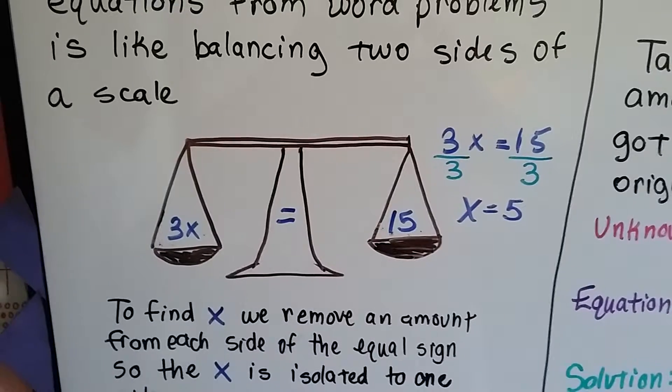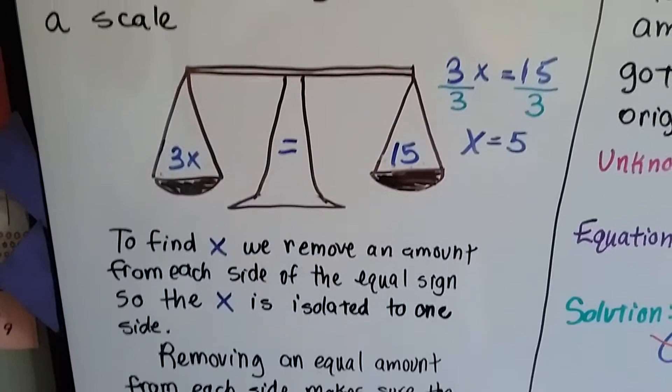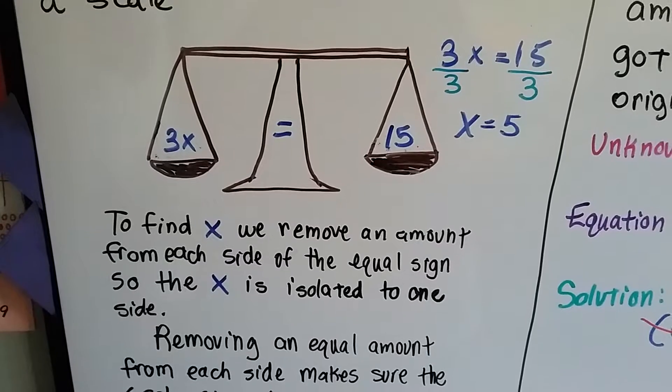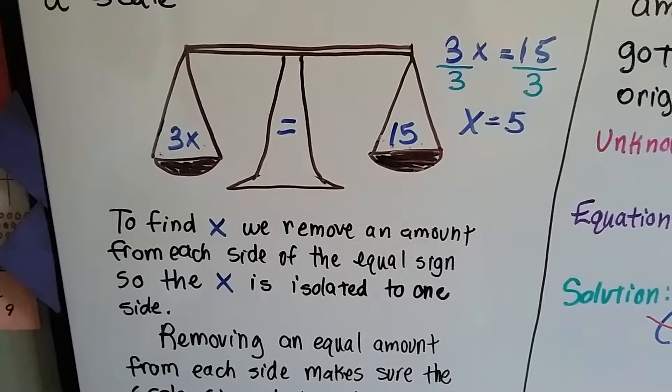We've got 3x on one side and 15 on the other, and they're equal. To find x, we remove an amount from each side of the equal sign so the x is isolated to one side.